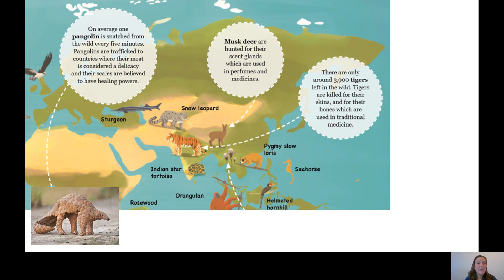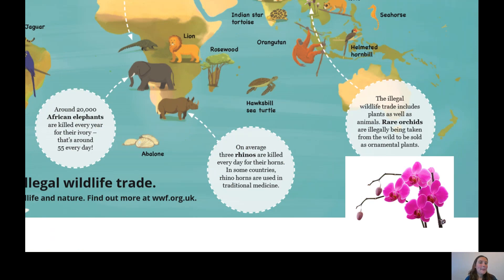Moving over to India, there are only around 3,900 tigers left in the wild. Tigers are killed for their skins and their bones, which are used in traditional medicine. Around 20,000 African elephants are killed every year for their ivory — that's around 55 elephants killed every single day for their tusks. And on average, three rhinos are killed every day for their horns, which in some countries are also used in traditional medicine.